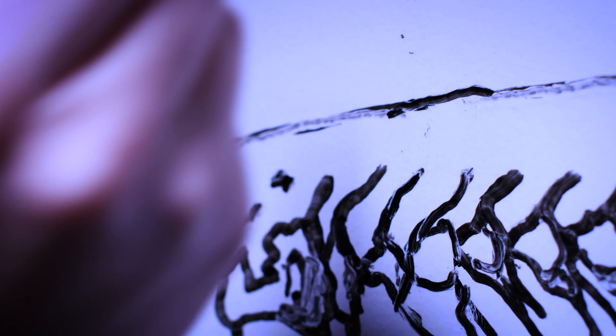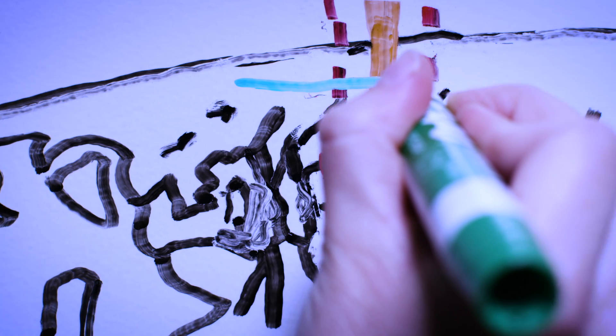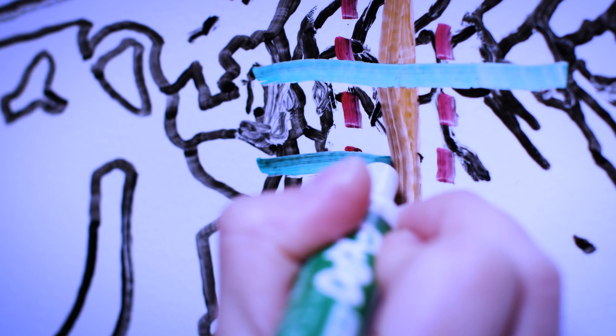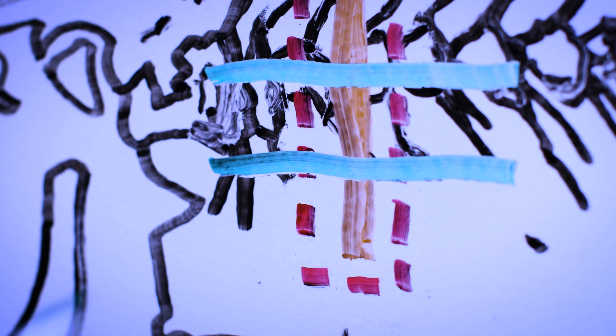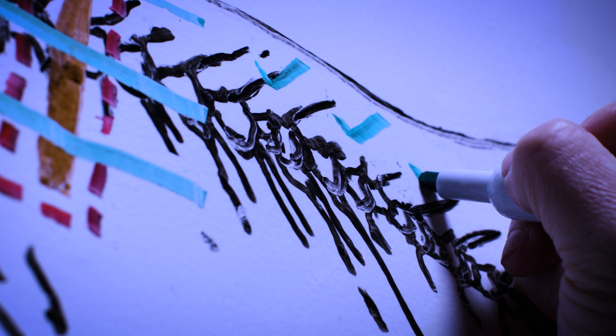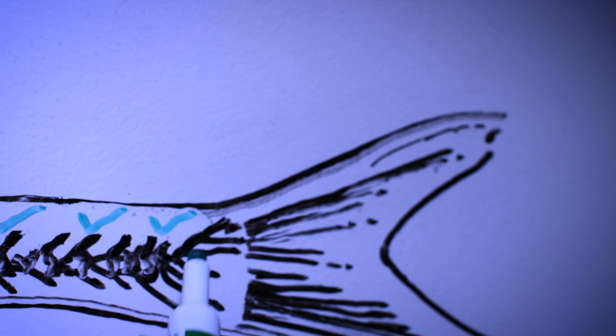In zebrafish, none of those negative phenomena occur. You can have a very similar type of damage of the spinal cord after injury, but instead of forming this really dense scar, cells actually create highways or bridges across the injury site. With these bridges being formed, these axons are allowed to cross back through the injury site, remake connections, and within about a month, it's able to swim again.